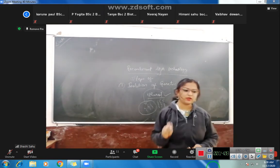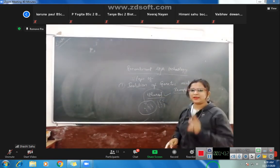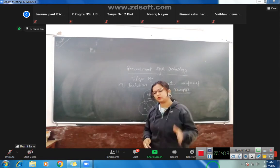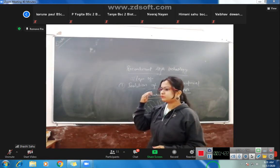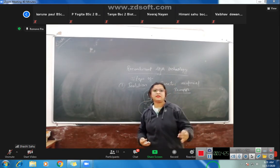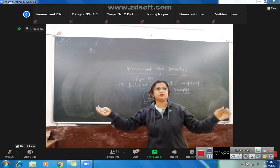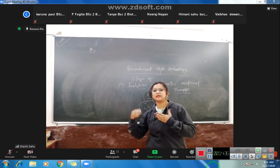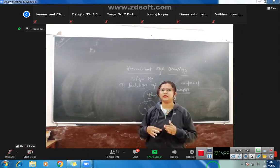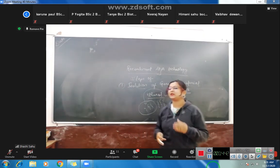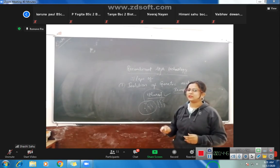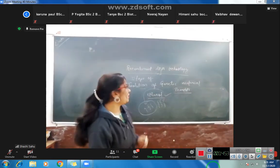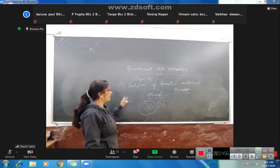So we have studied the isolation of genetic material, which is the first step. In Recombinant DNA Technology, the first task is to isolate DNA from two different organisms, purify it using the process we discussed, and then we will combine them. That is the whole process of the first step. Now, the second step is restriction enzyme digestion.